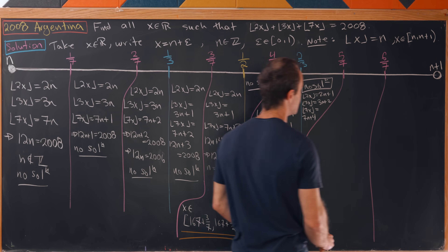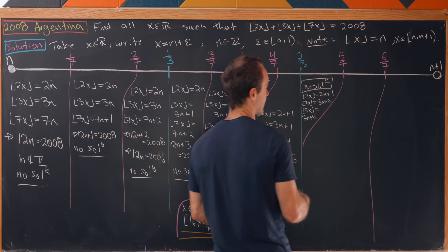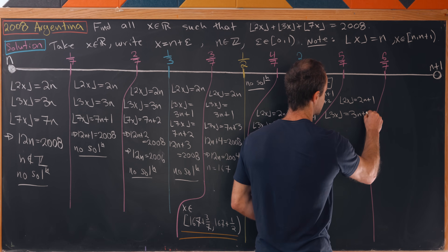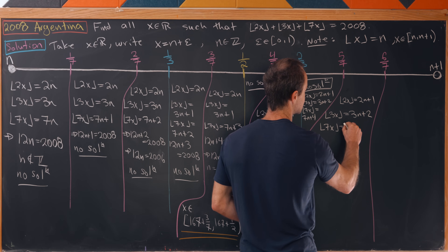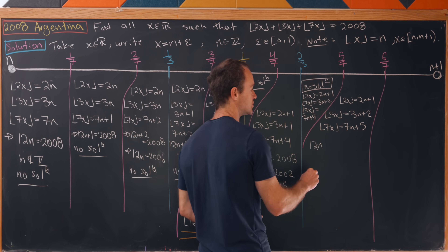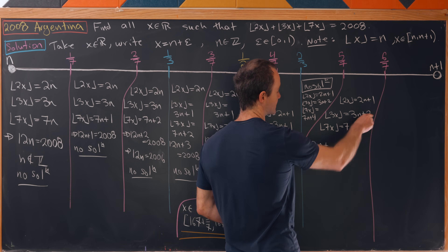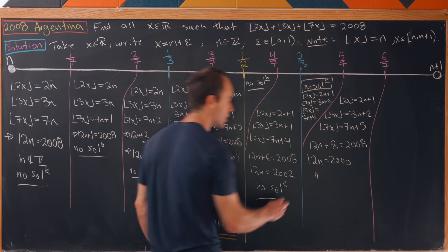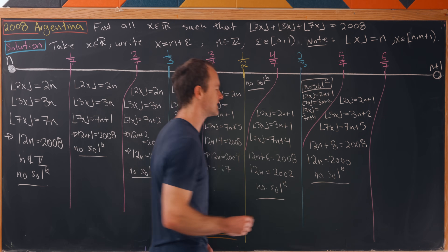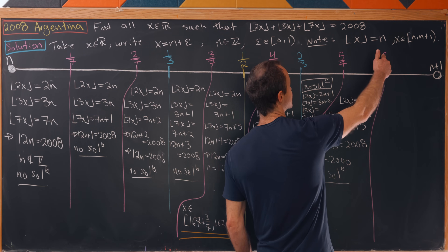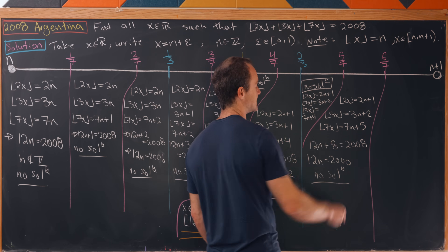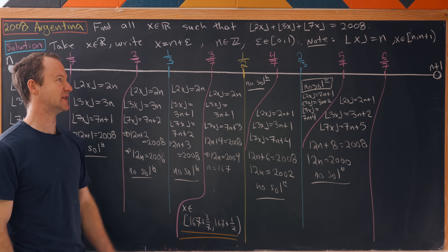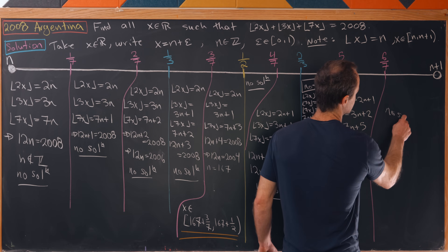Between 5/7 and 6/7: floor(2x) = 2n + 1, floor(3x) = 3n + 2, floor(7x) = 7n + 5. Adding those gives 12n + 8 = 2008, so 12n = 2000 — no solution by the divisibility-by-3 argument. Moving to the last region above 6/7: floor(7x) becomes 7n + 6, but the leftover parts again add to an odd number, so we cannot sum to 2008. No solution here either.